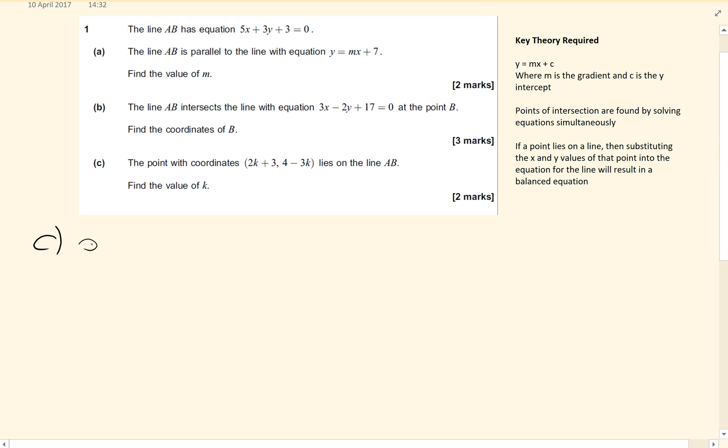So we've got our x value is going to be 2k plus 3, and our y value is 4 minus 3k. So we are saying this lies on the line AB. So AB is the line 5 lots of x plus 3 lots of y plus 3 equals 0. So we're going to substitute the x and the y values in.